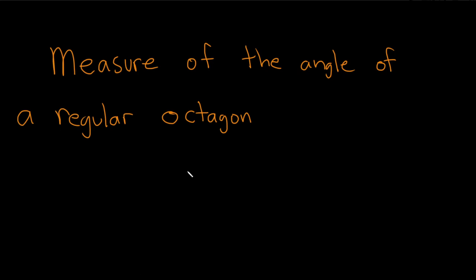Find the measure of the angle of a regular octagon. The formula for the measure of an angle of a regular n-gon is 180 minus 360 over n. This will give you the measure of an angle of a regular n-gon.